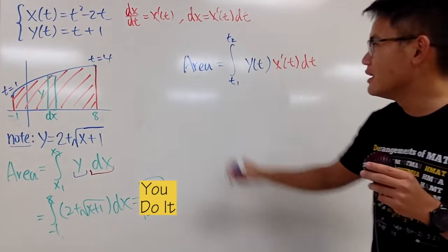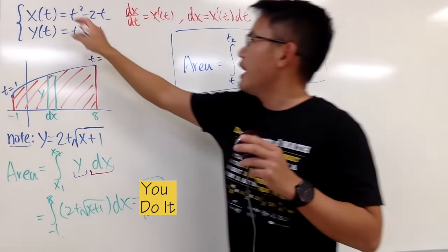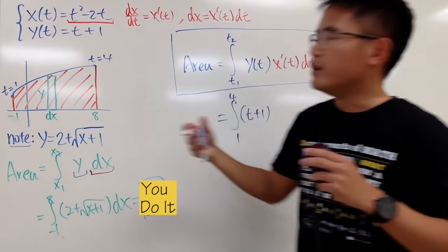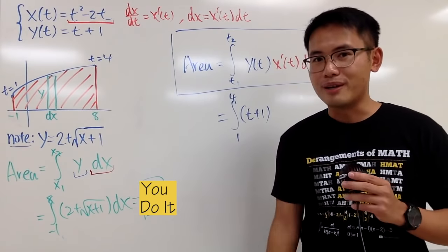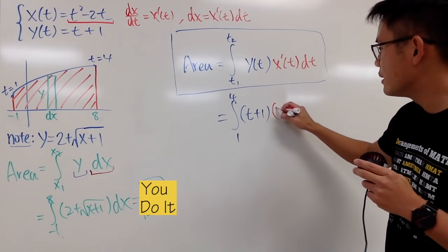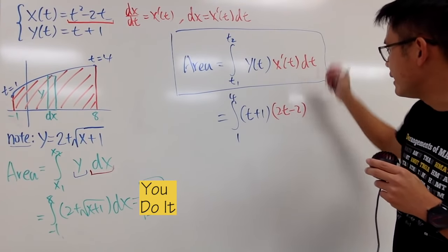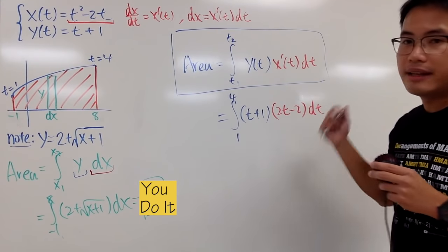And I would, of course, do this with you guys. This is pretty much the integral. t1 is 1. t2 is the ending t value, which is 4. y of t is this. You are just going to plug in this right here. So, you can just put on t plus 1. And then, x prime of t. You look at this expression. And then, you just differentiate that the regular way. So, you get 2t minus 2. And then, in the end, you have the dt. And that's all.